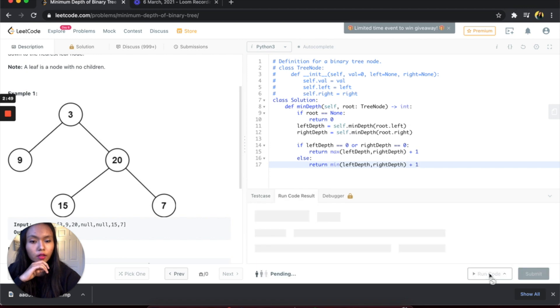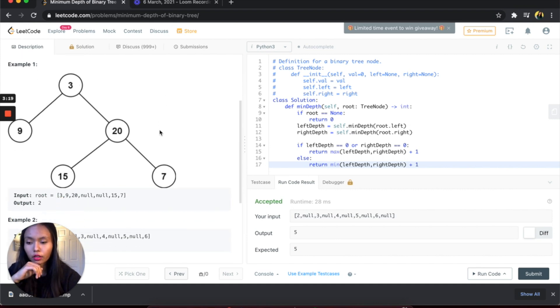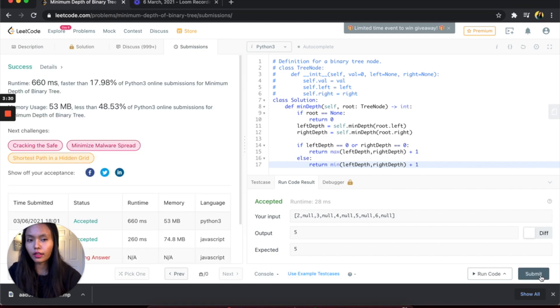Yeah, awesome. So this else statement would be hit in a case like where we are returning one from this side to count the nine, and then from this side we will be returning a two. Then we want to take the minimum, right? We want to take the left side and add one to it, which is the current node three. That's how we get the answer of two here. Okay, awesome. I'm going to go ahead and submit. Yeah, it's success.